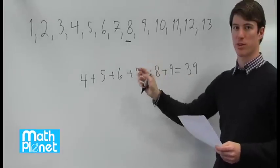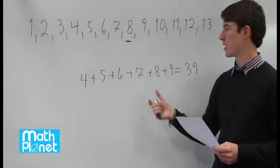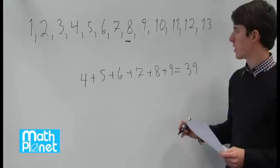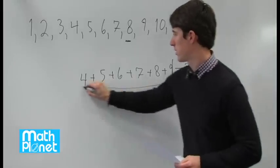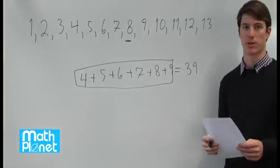So this is the greatest possible consecutive sum of six numbers that gives us a sum that's less than 40. So this series right here must be our answer.